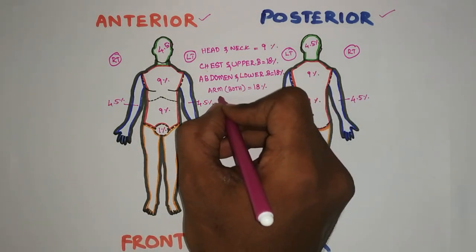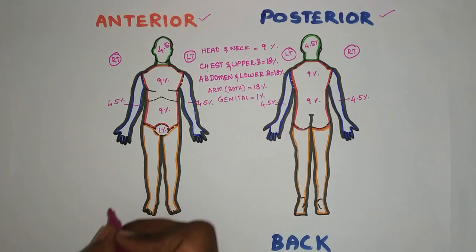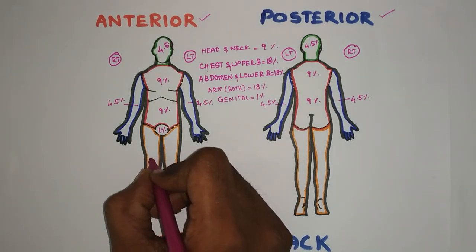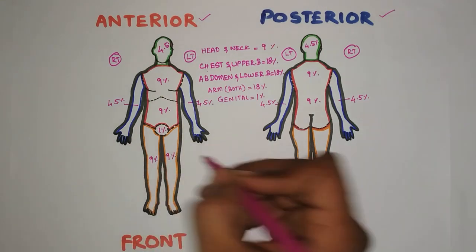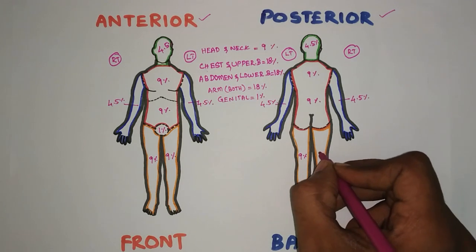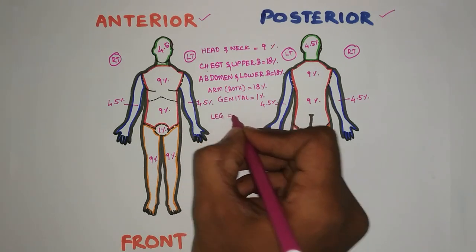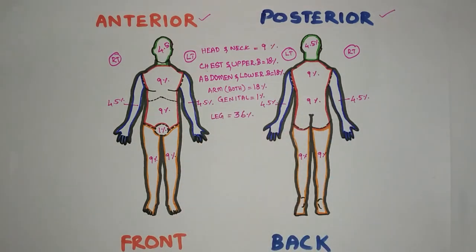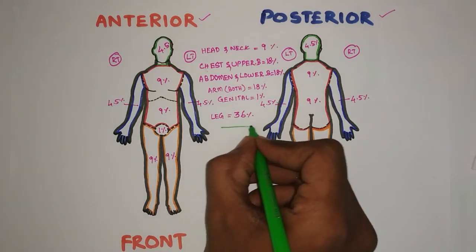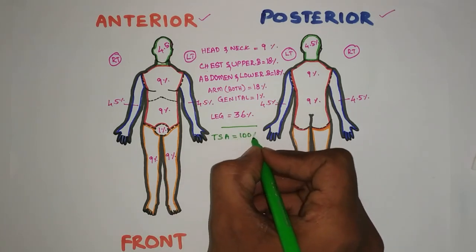The genital area will be considered as only 1%. Each leg will be considered as 9% on the anterior side and 9% on the posterior side, similarly 9% and 9% for each leg, so the lower extremities are totally 36%. If you calculate the total body surface area, it will come to 100%.